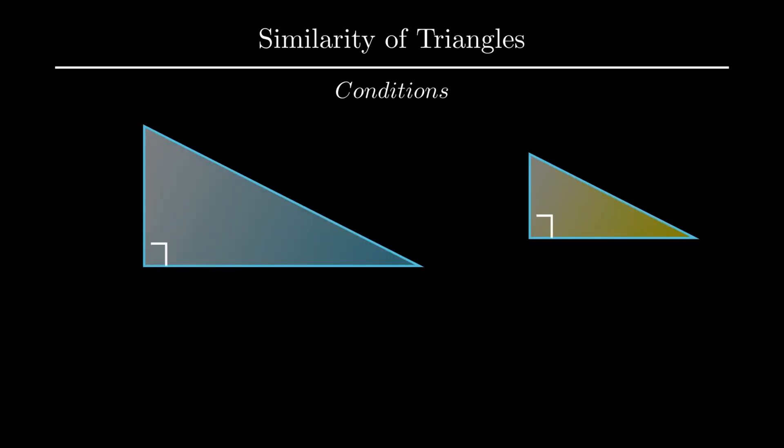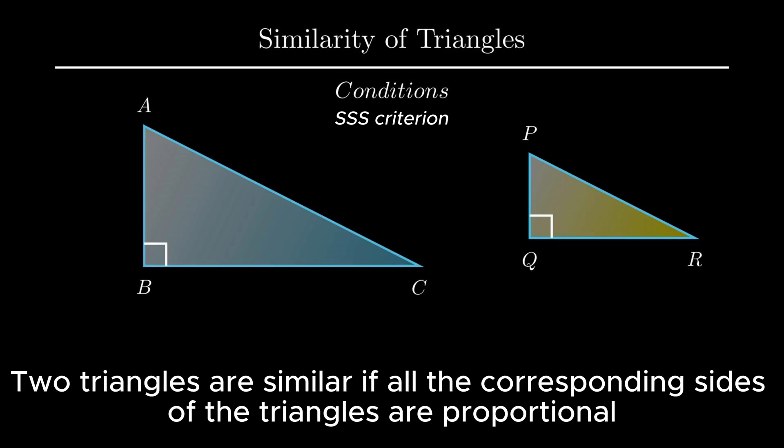Restricting our study to similarity of two triangles, let's understand the mathematical condition for similarity of two given triangles. First condition is SSS similarity, i.e. side-side-side, which states that if all the corresponding sides of two given triangles are proportional, they are said to be similar.